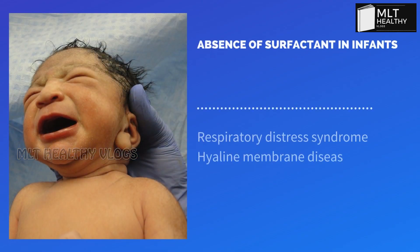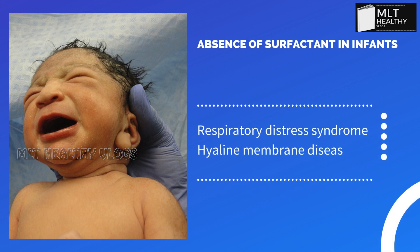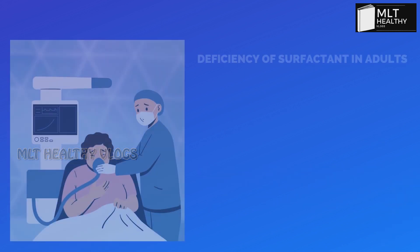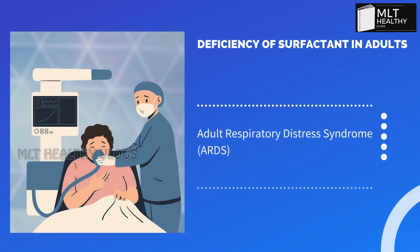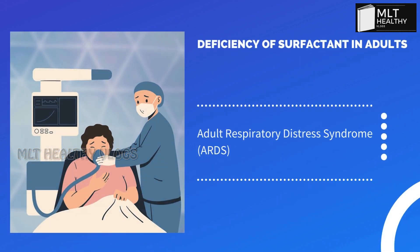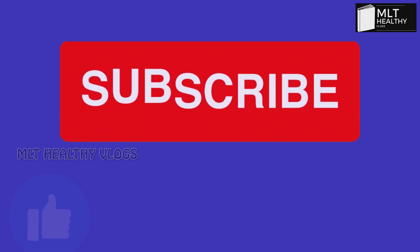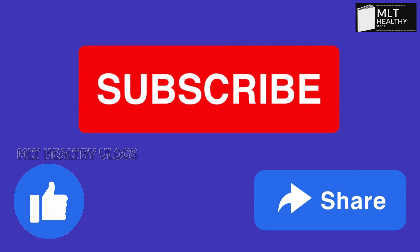In newborn babies, if the surfactant is absent, this causes collapse of the lungs — known as Respiratory Distress Syndrome, also called Hyaline Membrane Disease. This is due to deficiency of surfactant. In adults, deficiency can lead to Adult Respiratory Distress Syndrome, which can be caused by viral infections.